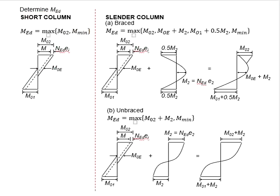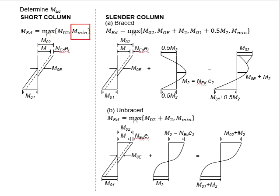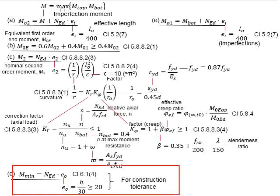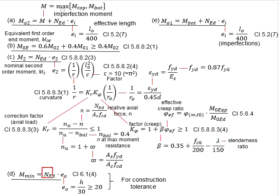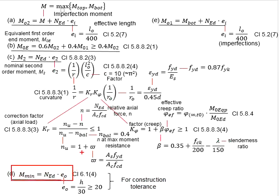For the short column, the M_ED will be the maximum of M02 and M_min. The M_min is meant for the construction tolerance. It is determined by multiplying the N_ED with the eccentricity E0. Based on the Eurocode, E0 will be equal to H/30, and E0 has to be greater than 20mm. M_min represents the case where even if there is no moment acting on the column, there will be a minimum moment generated within the column due to inaccuracies of construction on site. This represents the nominal moment happening in the columns by nature.